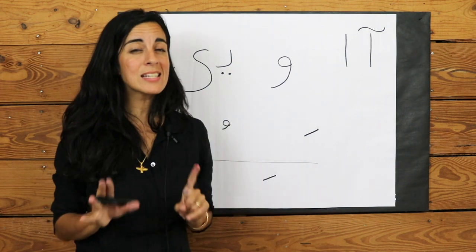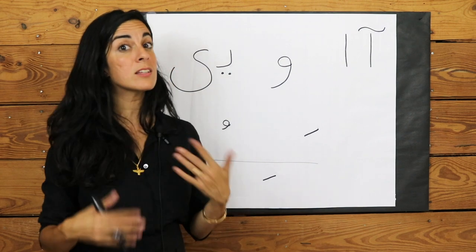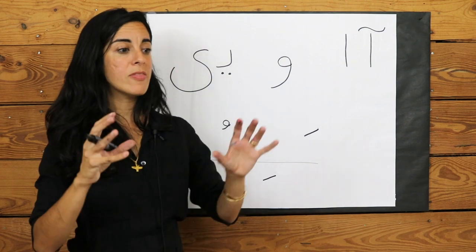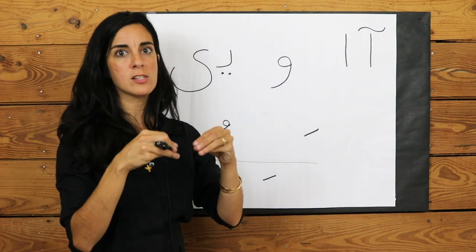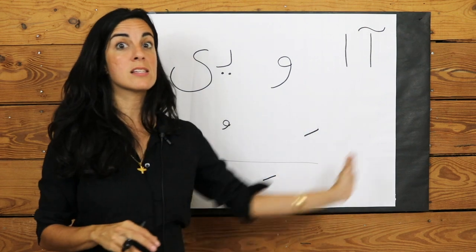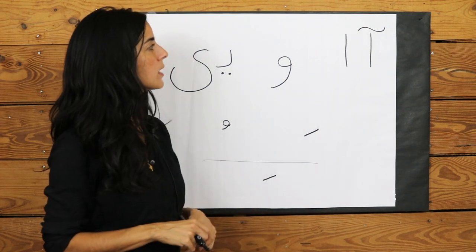So these are the only six vowels that we have in the Persian language. In the English language, we have a lot more vowels and they are a combination of different letters together. In Persian, this is all the vowel sounds we ever make.